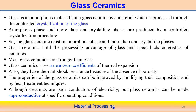There is another type of ceramic called glass ceramics. Glass is an amorphous material, but glass ceramic is a material which is processed through controlled crystallization of glass. This controlled crystallization procedure produces glass ceramics. Glass ceramics may not follow the regular arrangement of atoms over a long distance — it is a kind of amorphous material. When produced by a controlled crystallization procedure, both amorphous and more than one crystalline phase can be associated with this material.